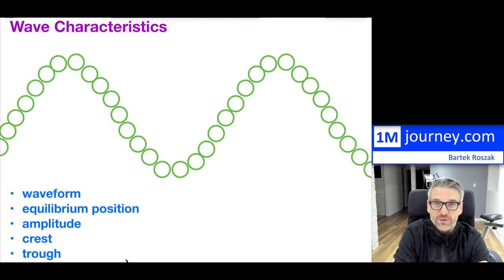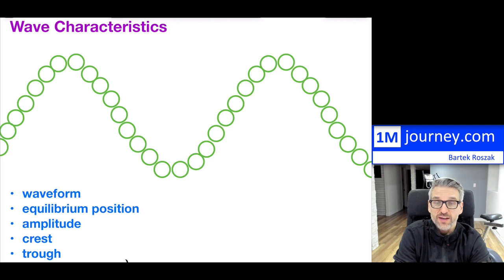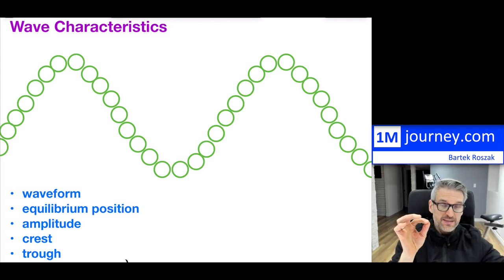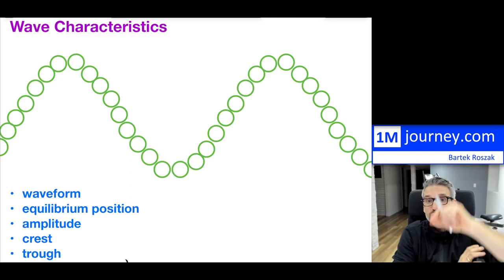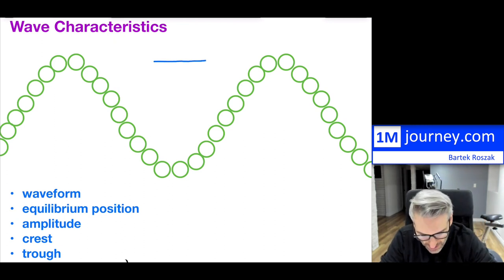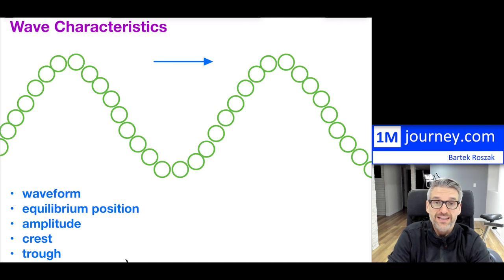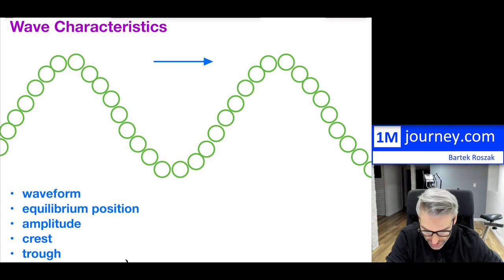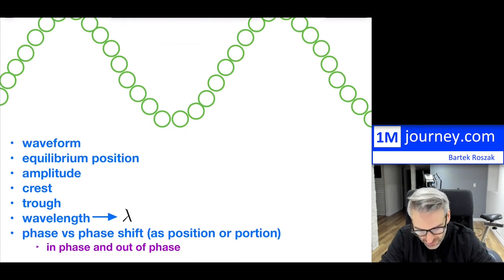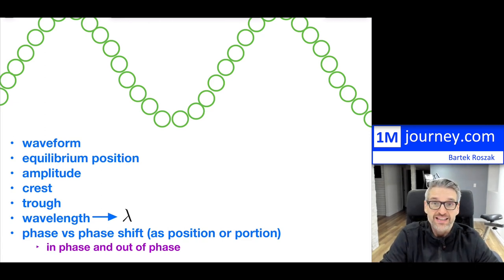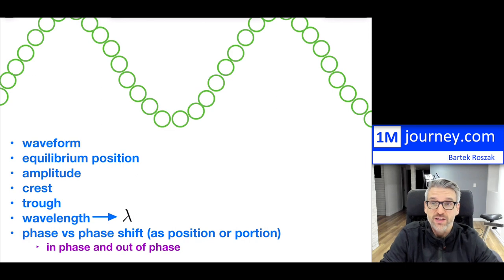If you go back to a transverse wave, which is the first one I'm going to talk about, it's a little bit easier to understand. Here is a set of particles that have been vibrated in some way, so these particles are going to be moving up and down. Because it's a transverse wave, the particles move up and down, yet the wave propagates in a perpendicular direction to the motion of the particles — let's assume to the right. As this wave propagates forward, we have certain characteristics we can outline.